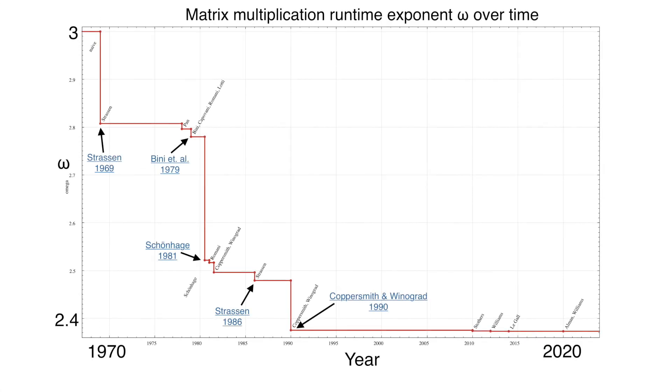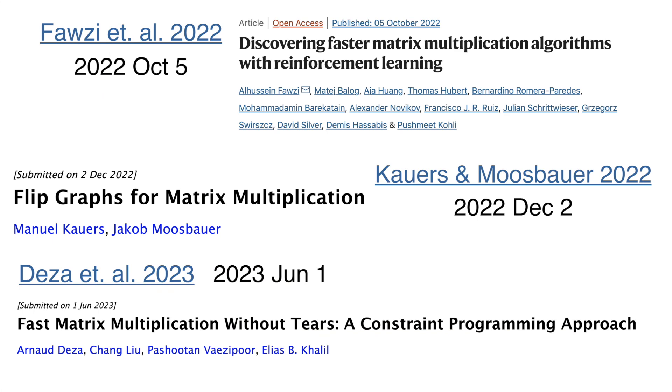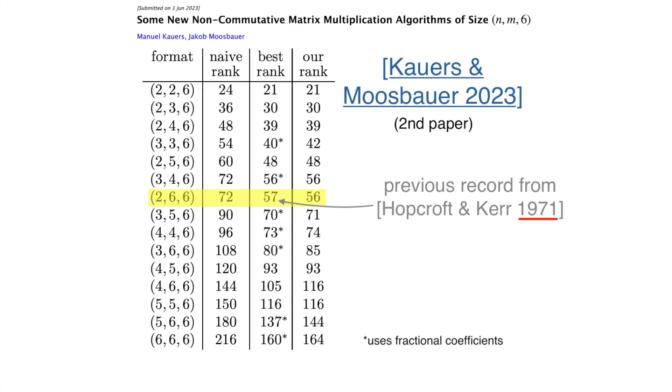Overall, the field of fast matrix multiplication has a rich history and in recent years has been given new life. With AlphaTensor, flip graphs, and constraint programming all being published within the last year, who knows what other advancements may be on the way.